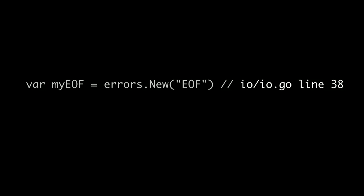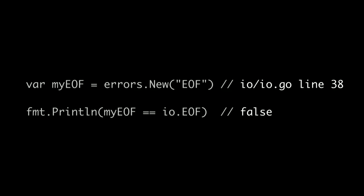Even if we follow the exact procedure used by the IO package — this is the line that it's declared on — to create our own EOF value, my EOF error and io.EOF are not equal, even though we use the exact same procedure to make them. So when you combine the lack of immutability, the lack of fungibility, the lack of equality, you have this really weird set of behaviors that stem from the fact that sentinel error values are not constant expressions.